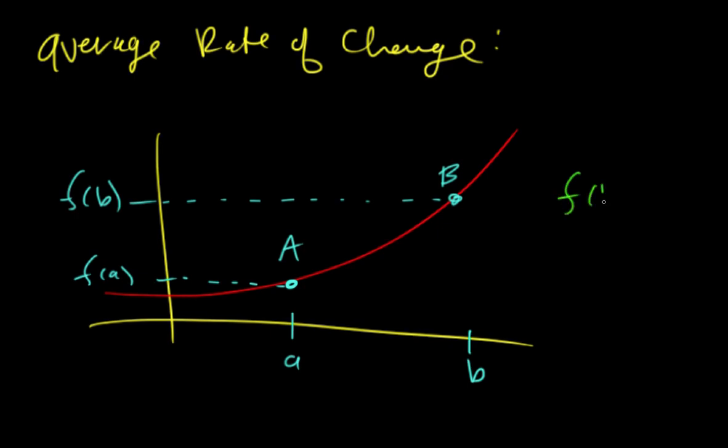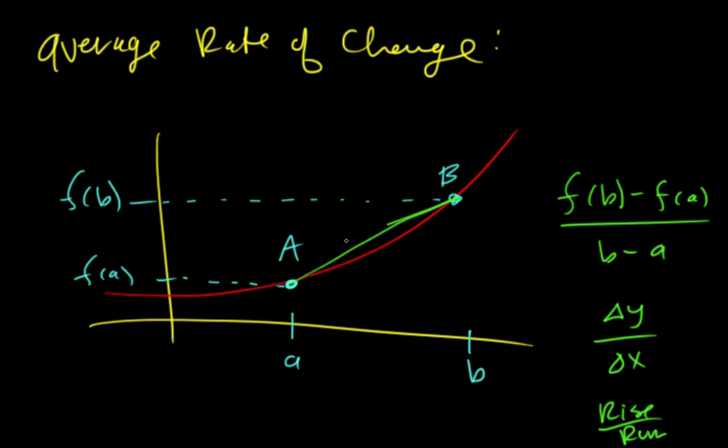It's going to be f of b minus f of a over b minus a, which we could also think of as change in y over change in x, or rise over run, or just the slope of this chord.